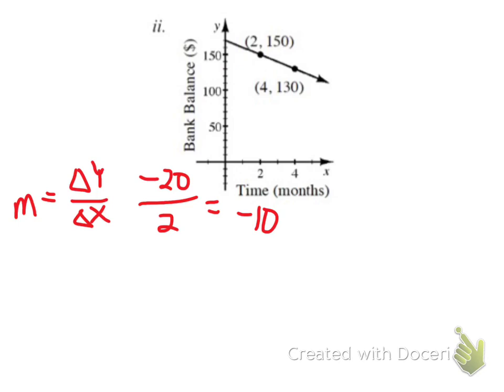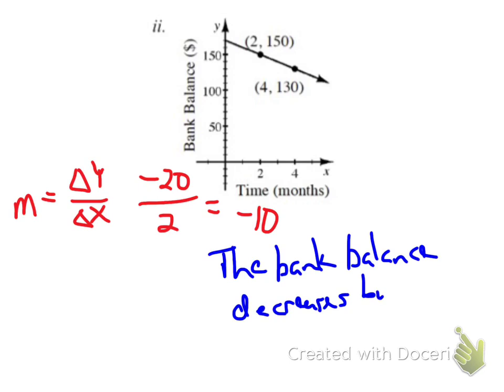So with a slope of negative 10, looking at what our y-axis and x-axis is actually representing, our change in y is $10, and it's a negative $10, so it's actually going down $10 every one month. The bank balance is going down or decreases by $10 every month.